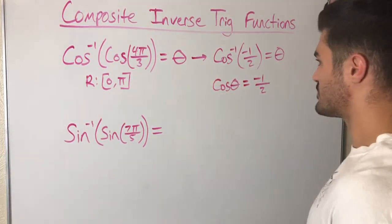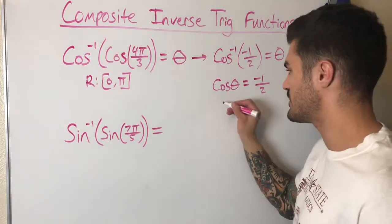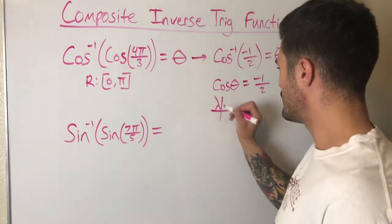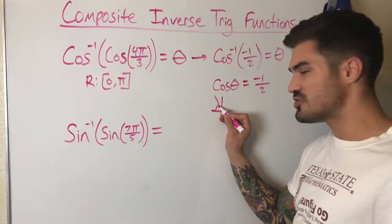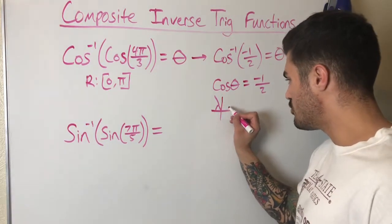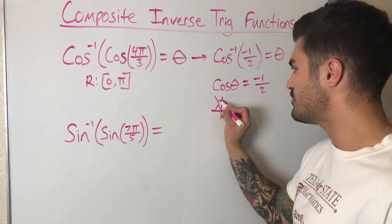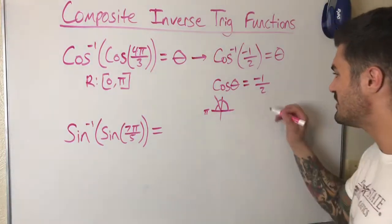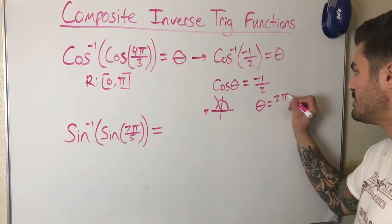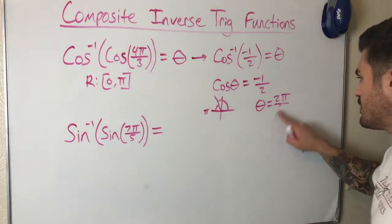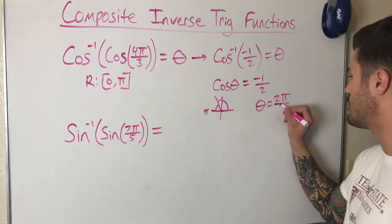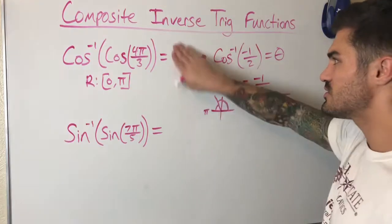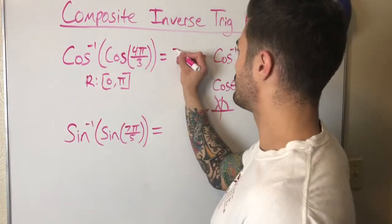Drawing a picture is key — I highly recommend it. My reference angle is π/3, meaning the angle between the x-axis and the terminal side is π/3. The actual angle in the second quadrant is π minus π/3, which is 2π/3. I can confirm that 2π/3 is within the range zero to π, and cosine of 2π/3 is indeed negative one-half. So the solution is 2π/3.